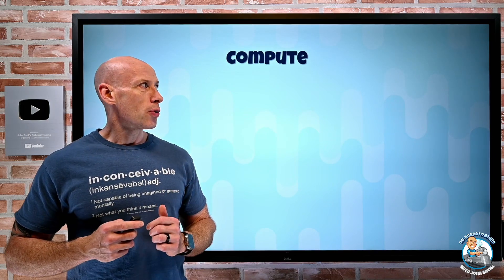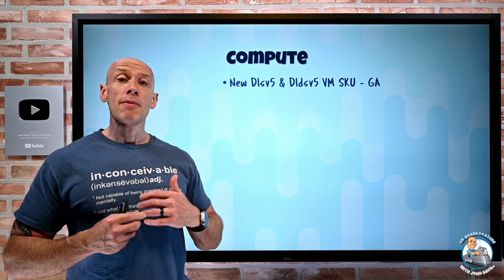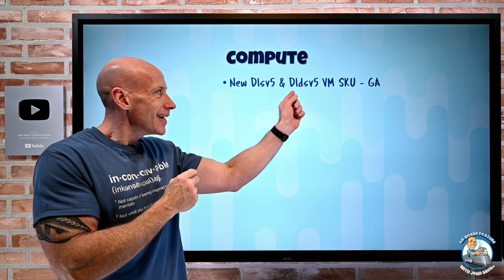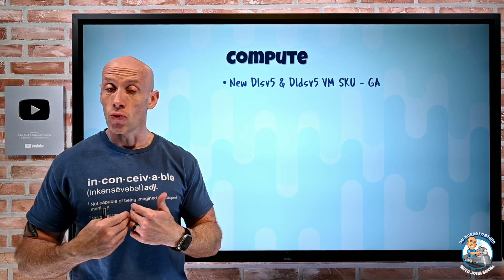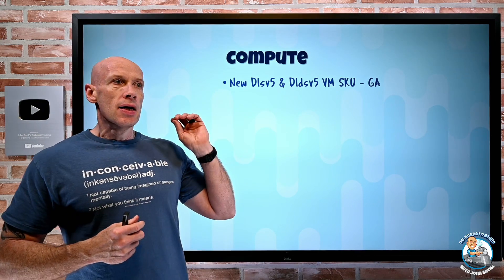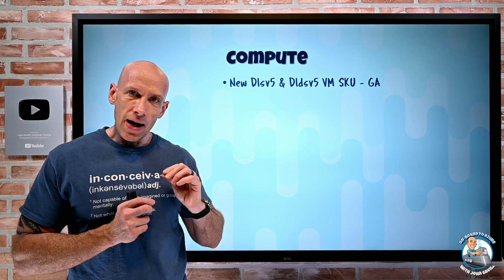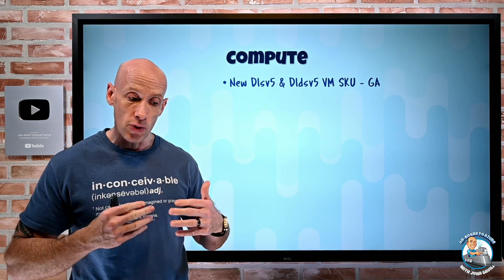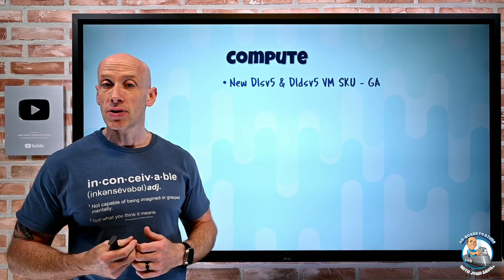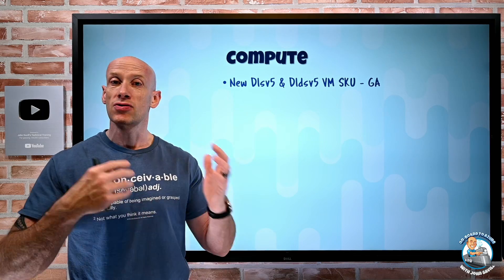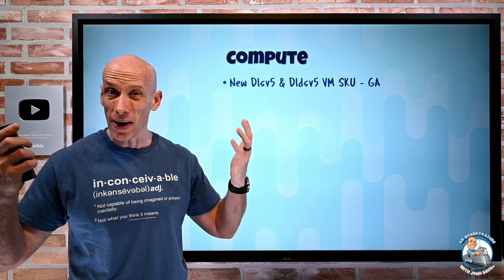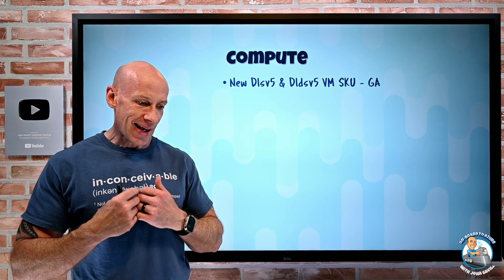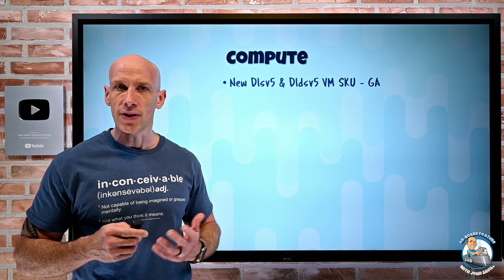On the compute side, there were some new VM SKUs — the DLSV5 and the DLDSV5. The little 'd' variant means it has local temporary storage on the host, so it's non-durable. These are general purpose, but for every one virtual CPU it's two gibibytes of memory, so they're a bit more compute-focused. They give different CPU-to-memory ratios, and good use cases include web servers, batch servers, and video encoding.